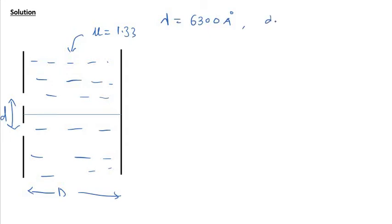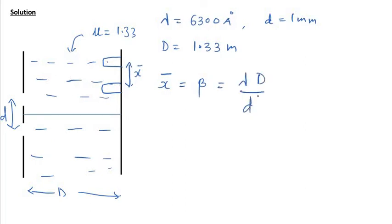Small d is 1 mm and capital D is 1.33 meters. The distance between two consecutive bright fringes, suppose this is one and this is another, the distance between two consecutive fringes is given by x bar, sometimes we also call this beta, the fringe width. This is equal to lambda capital D by small d. But the lambda which we measure is at this point on the screen - lambda is a measurement which is taken where the superposition takes place, that means lambda is measured on the screen and the screen is immersed in the water.